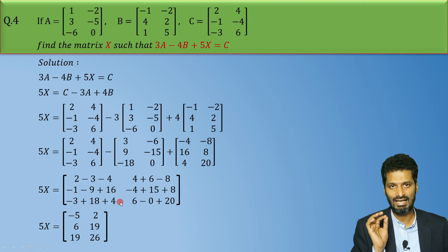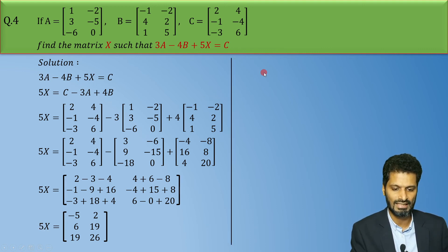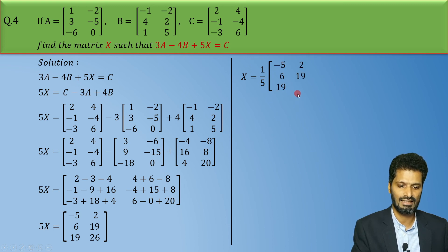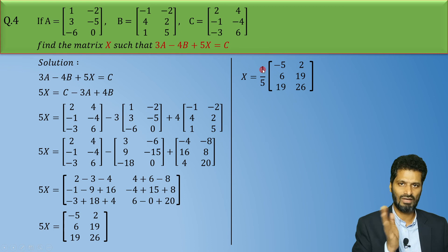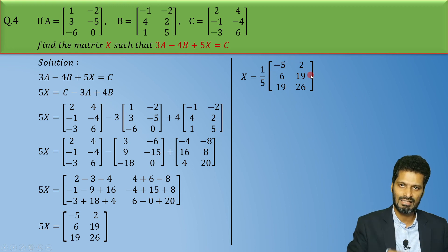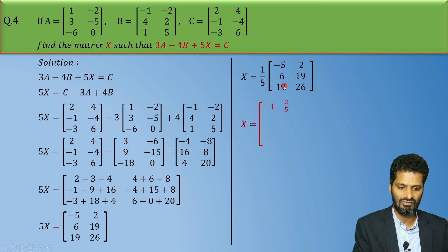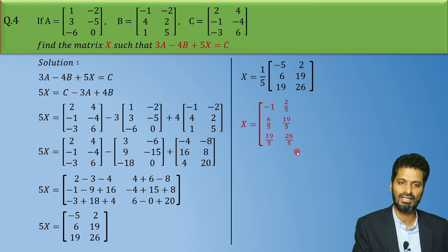Now we need to find X. We take the 5 to the other side and divide. So X equals 1/5 times the matrix [-5, 2, 6, 19, 19, 26]. Multiplying 1/5 into each element: 1/5 times -5 gives -1, times 2 gives 2/5, times 6 gives 6/5, times 19 gives 19/5, times 19 gives 19/5, and times 26 gives 26/5. So this is the final value of matrix X.